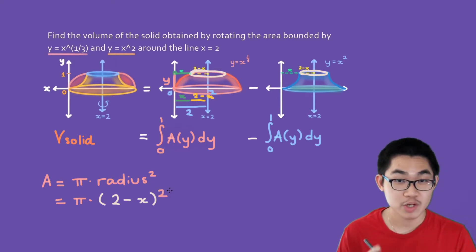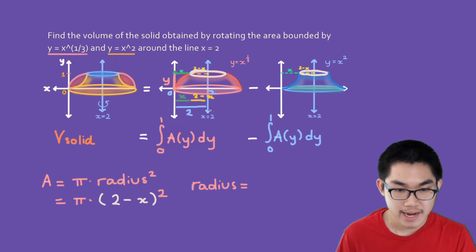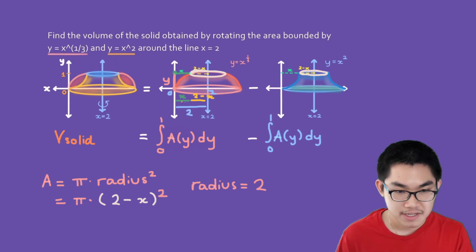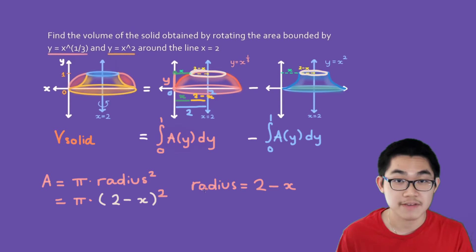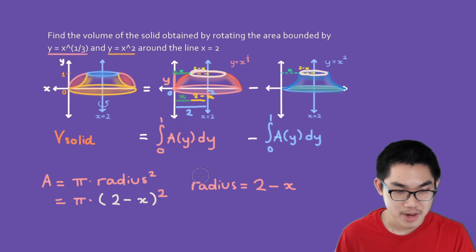So I'm going to show you a trick. You can always find the radius using this formula: just take the right x — which is 2 — and minus the left x, which is just x. And that's always going to give you the radius. You can use the diagram or you can use this formula, whichever way you prefer.